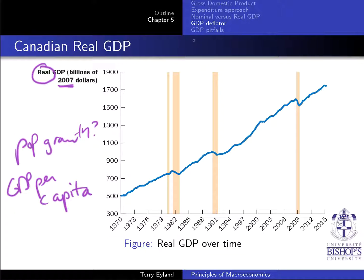So that's it for the GDP deflator. Next, we're going to look at some of the pitfalls of using the GDP approach if we're thinking about the welfare of Canadian citizens or citizens of another country.